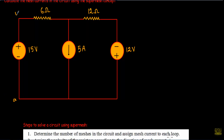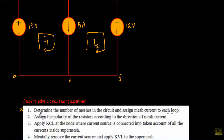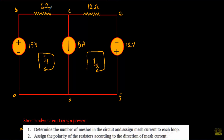Terminals A, B, C, D — loop A-B-C-D-A forms mesh one, so I assign mesh current I1 in the clockwise direction. Loop D-C-E-F-D forms mesh two, so I assign mesh current I2. Step two: assign polarity to the resistors according to the direction of the mesh current. For the 6 Ω resistor, I1 enters from one side, so that terminal is positive and the other is negative.